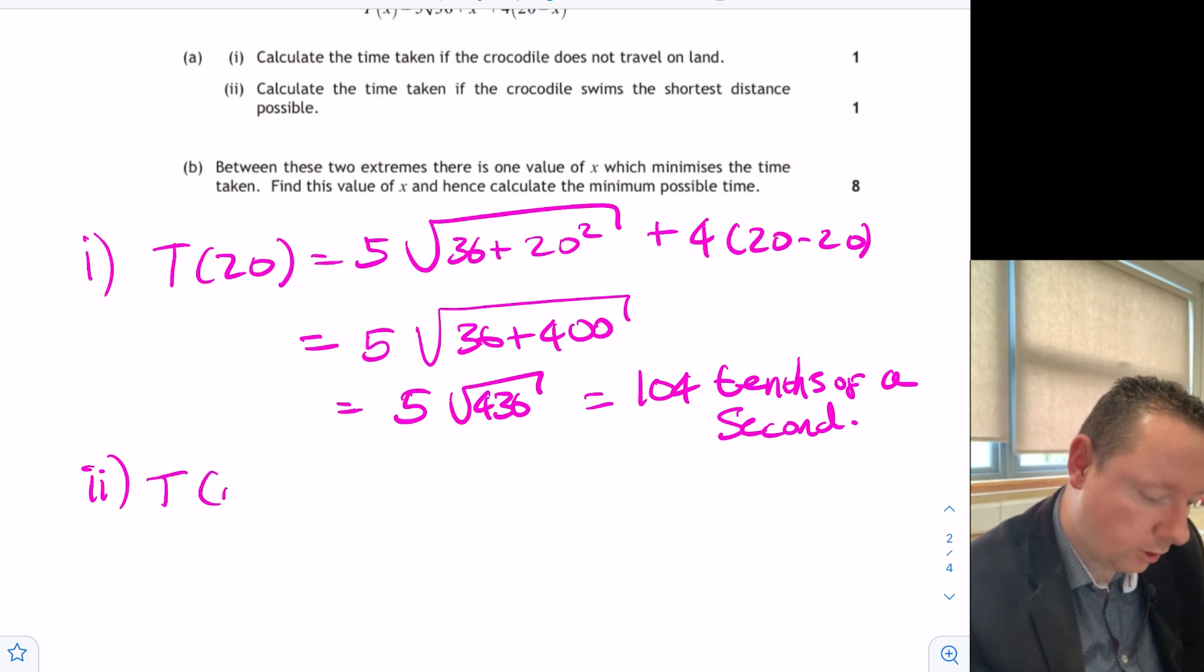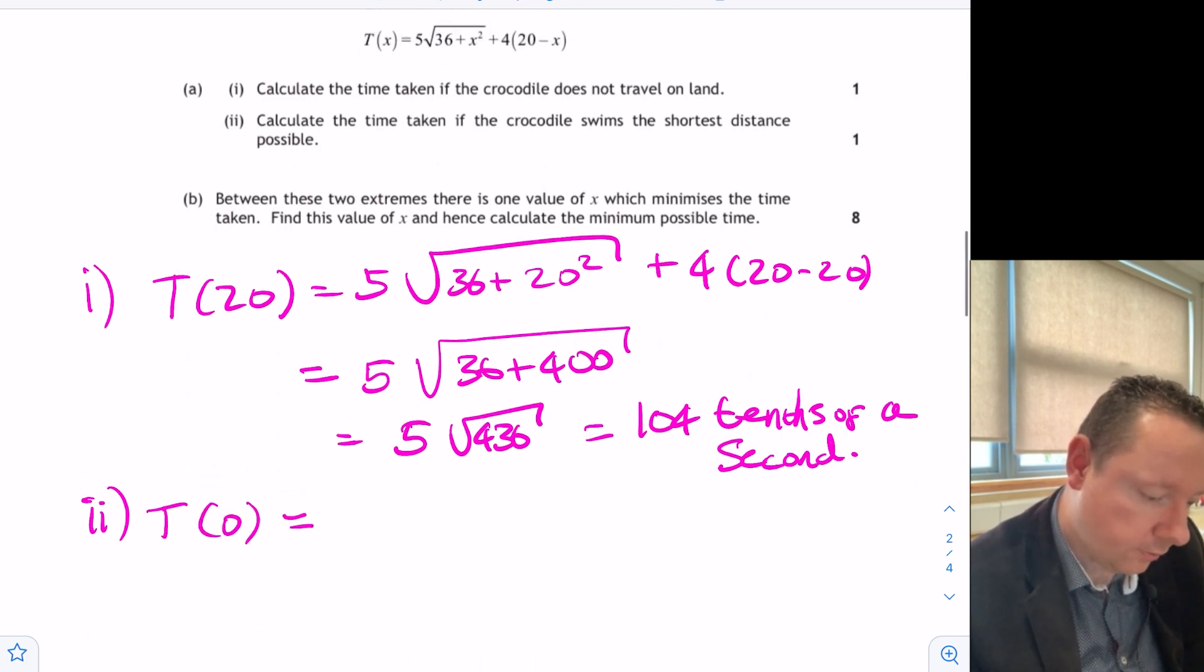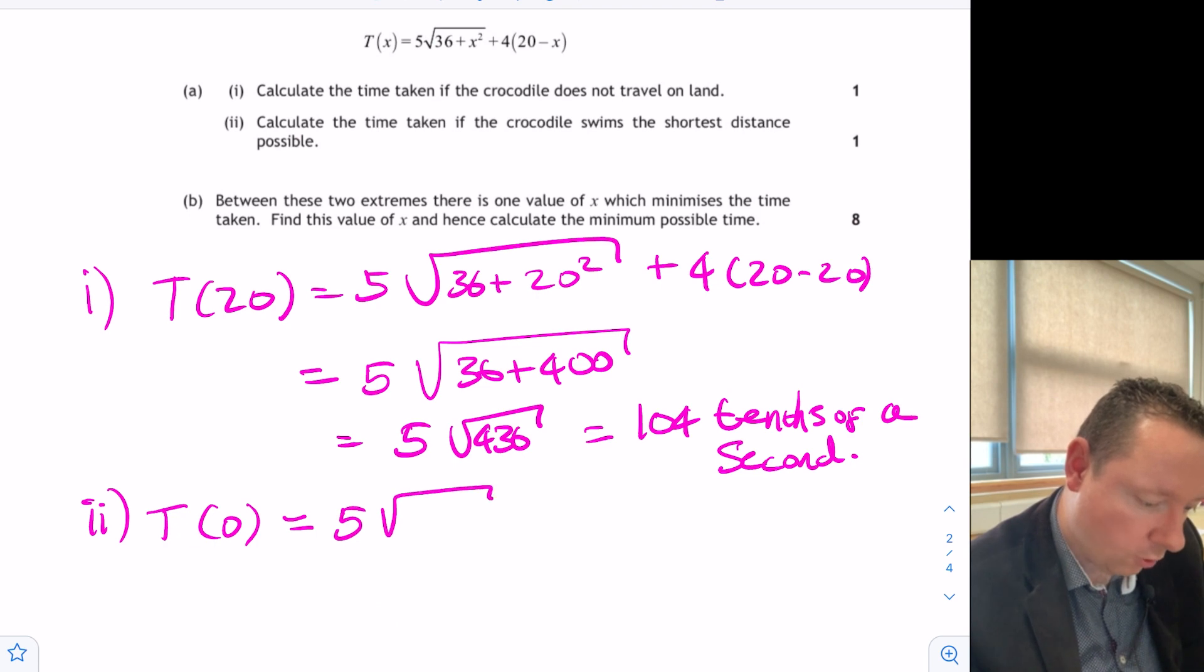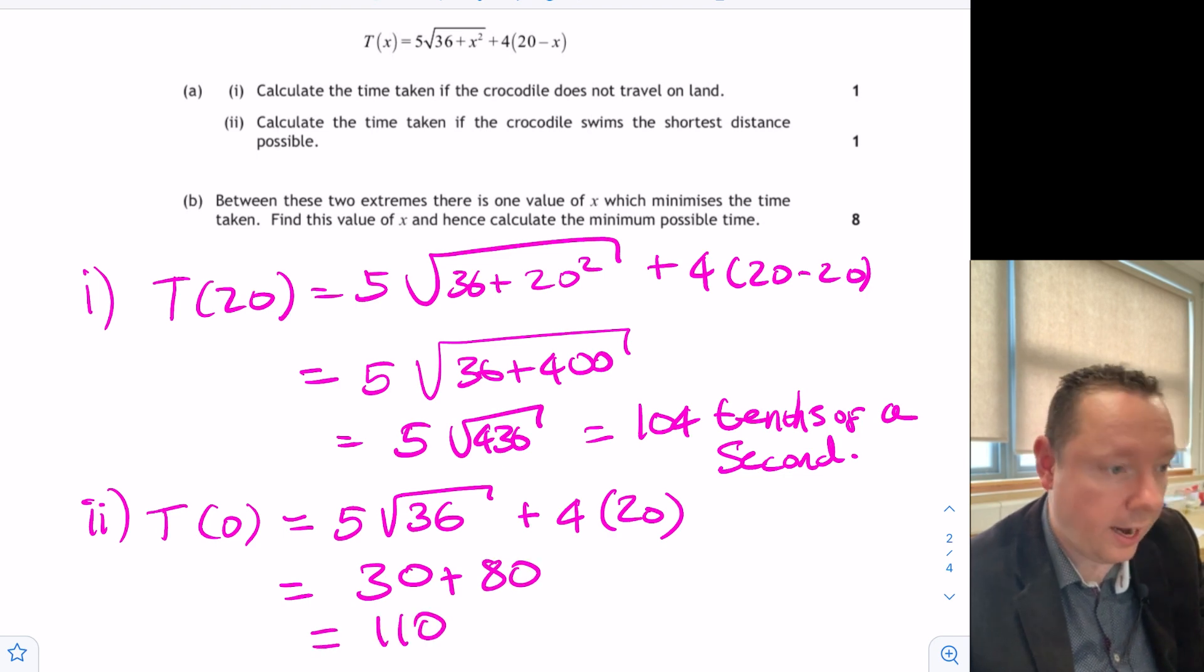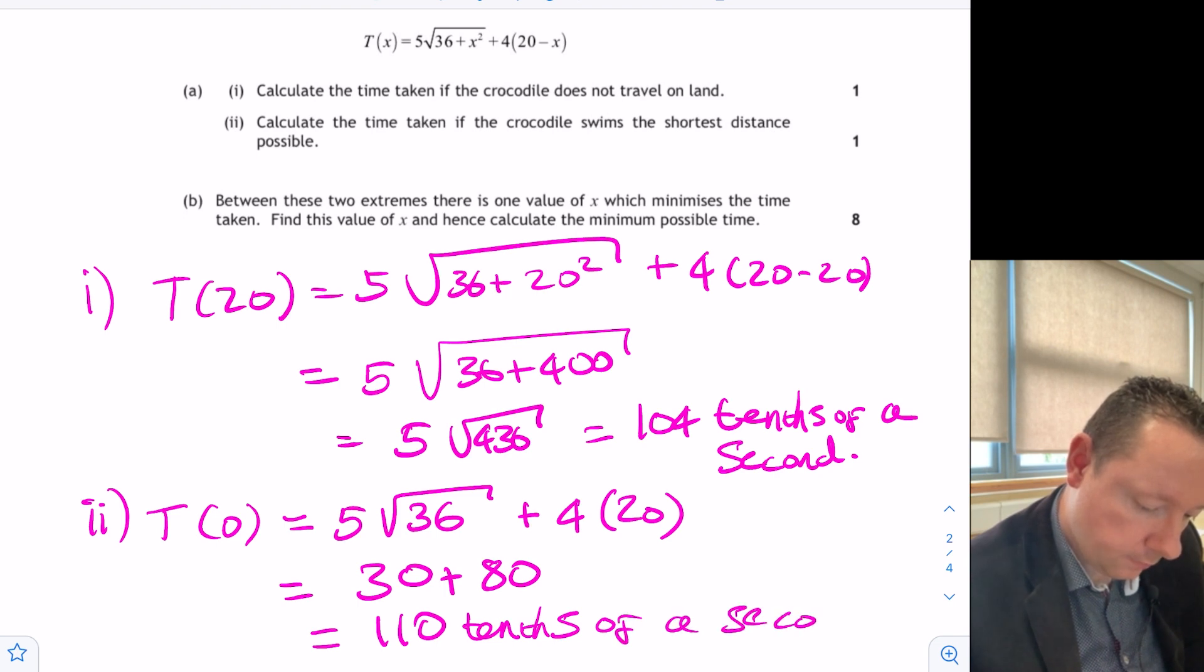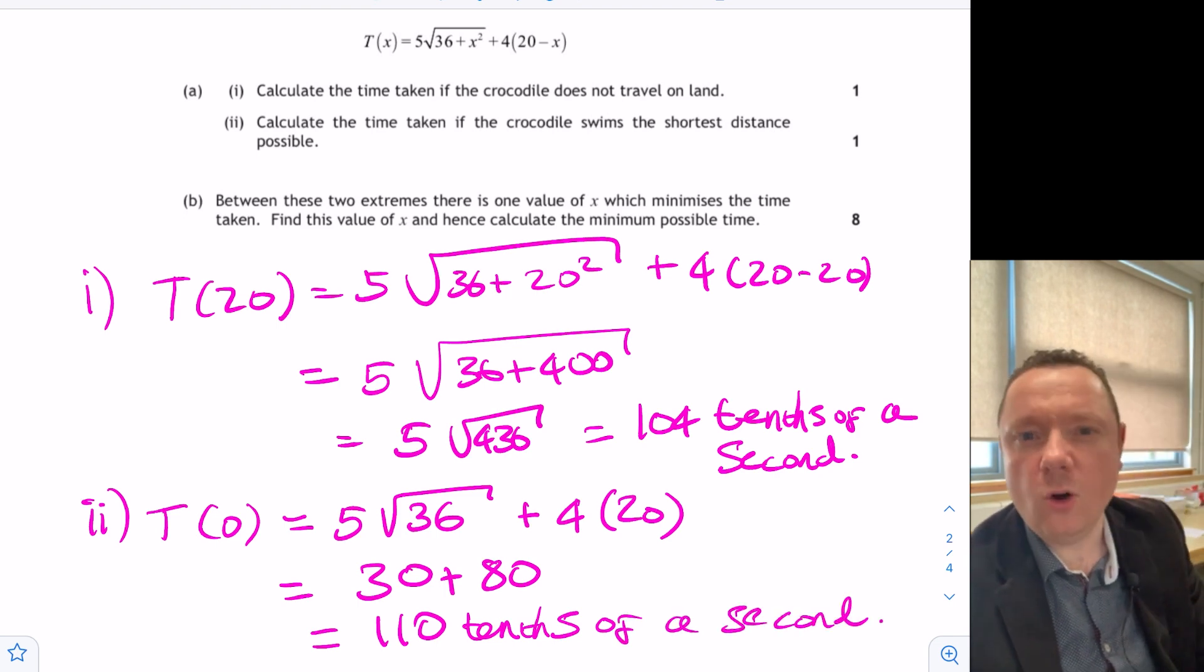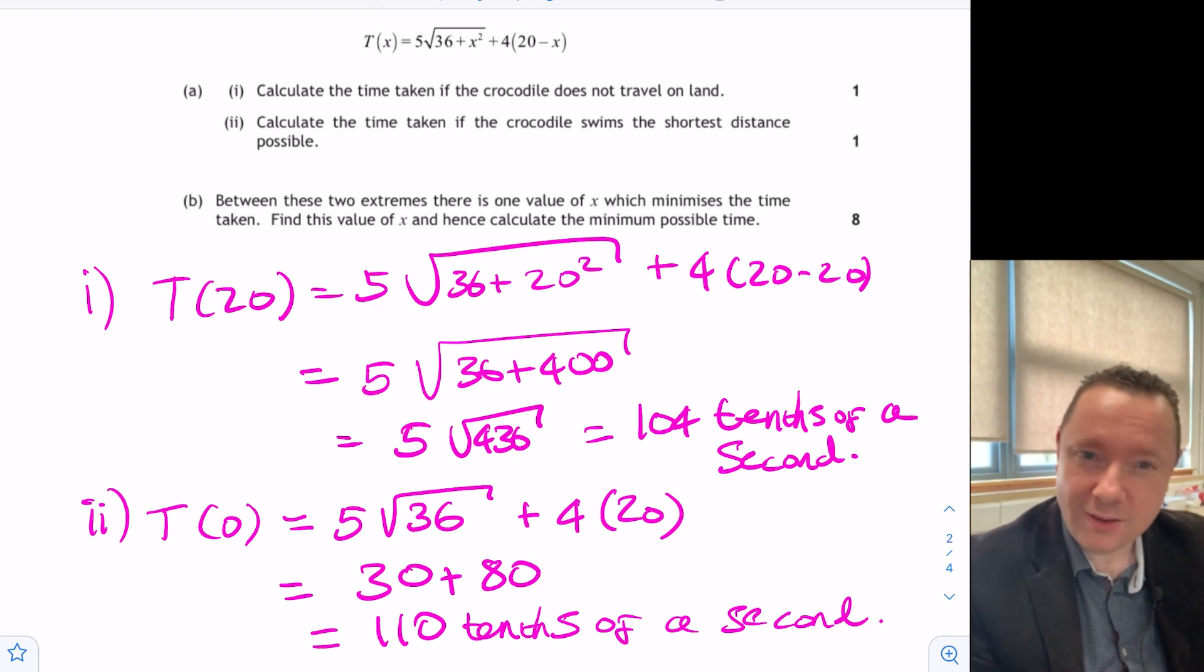So in this in other words x is zero. So for part two you just have to substitute t equals zero in to the formula. So you get 5 times the root of 36 plus zero squared plus 4 times 20 minus zero. 5 times 6 is 30. 4 times 20 is 80. That gives us 110 tenths of a second.